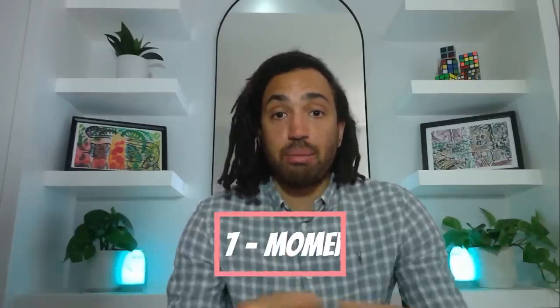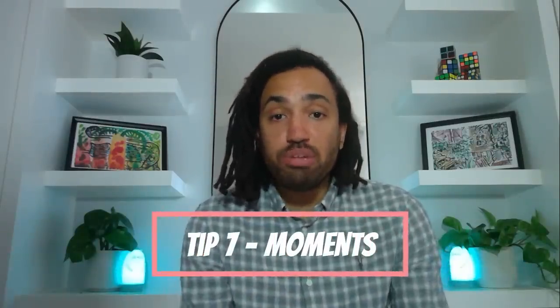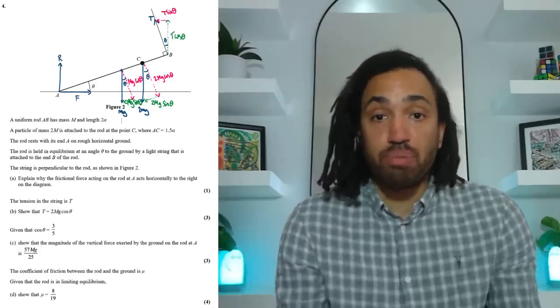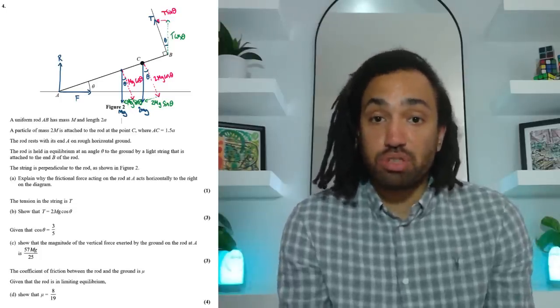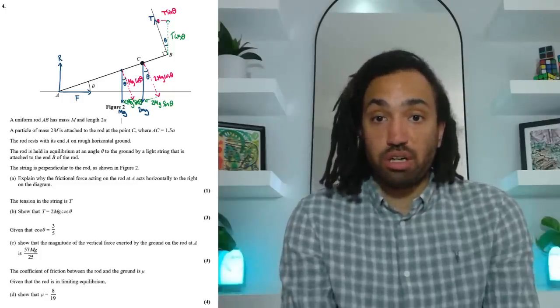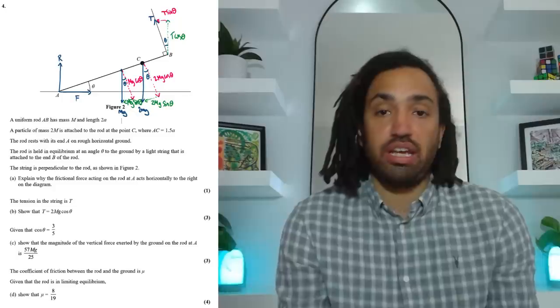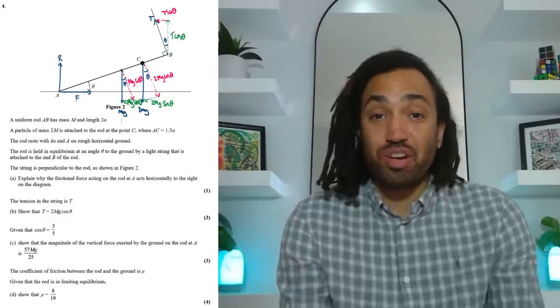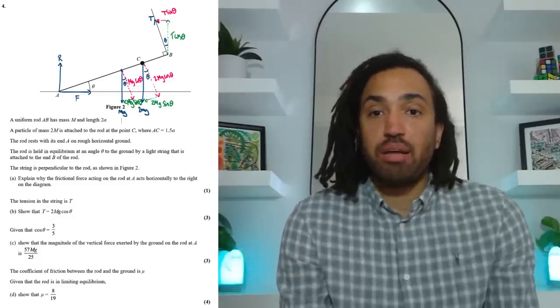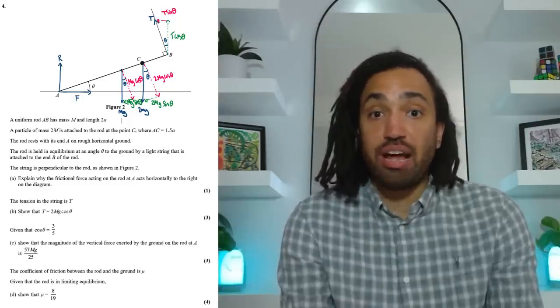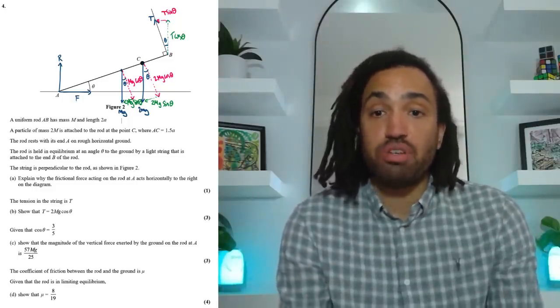Tip number seven and that is moments and how formulaic the questions can be. Have a look at this example. I've labelled my force diagram beautifully as it's so important as the last tip told us and then I've got four questions to answer. The first question is just a quick statement type question but then the next three are so formulaic. Part B asks us to work out what T is and you do that by first taking moments about the point which has the most unknown forces.